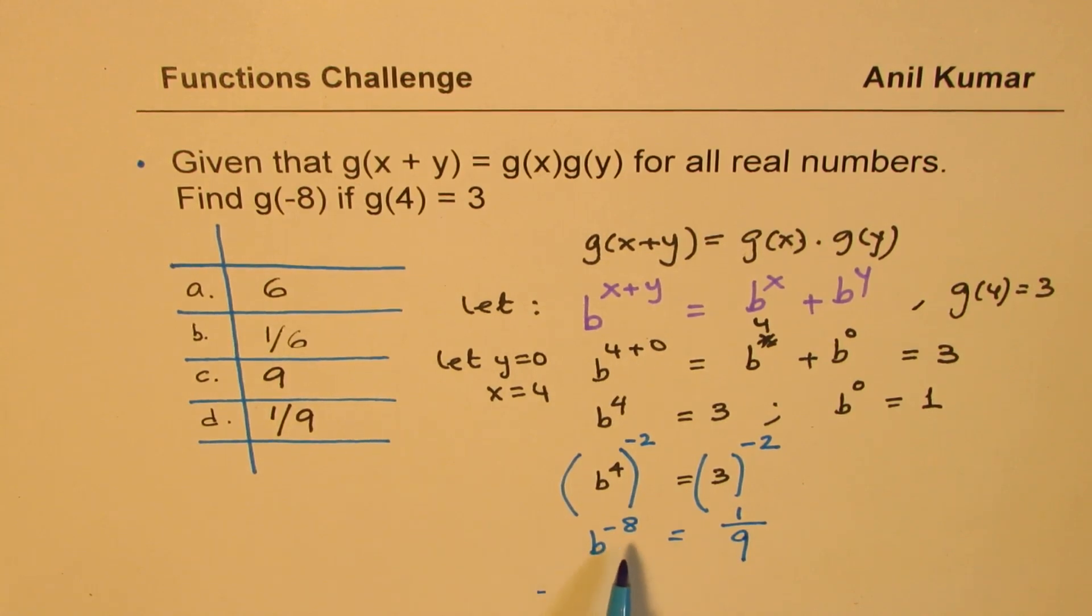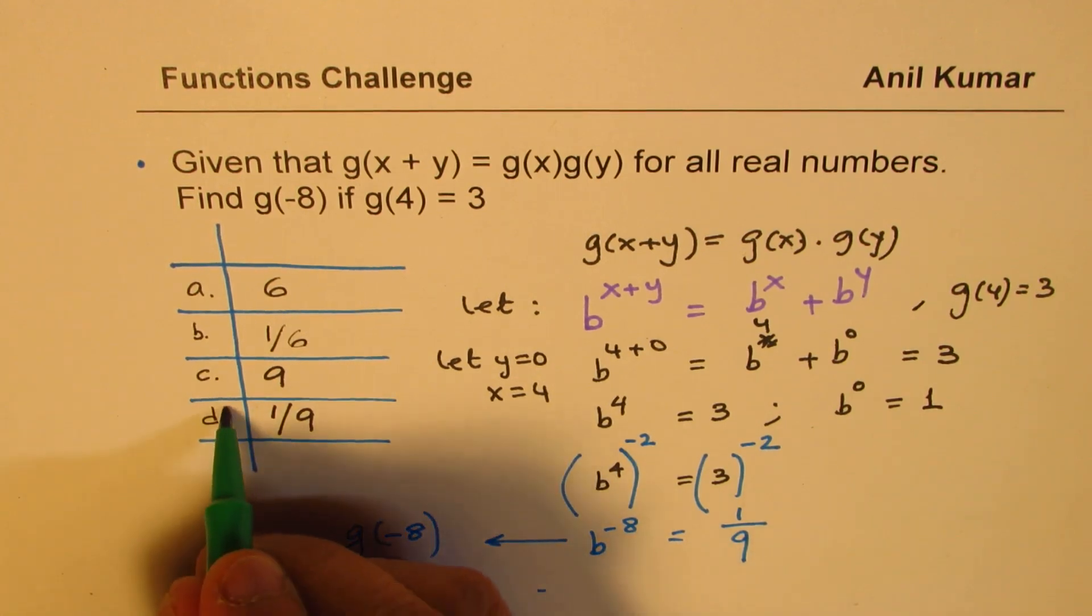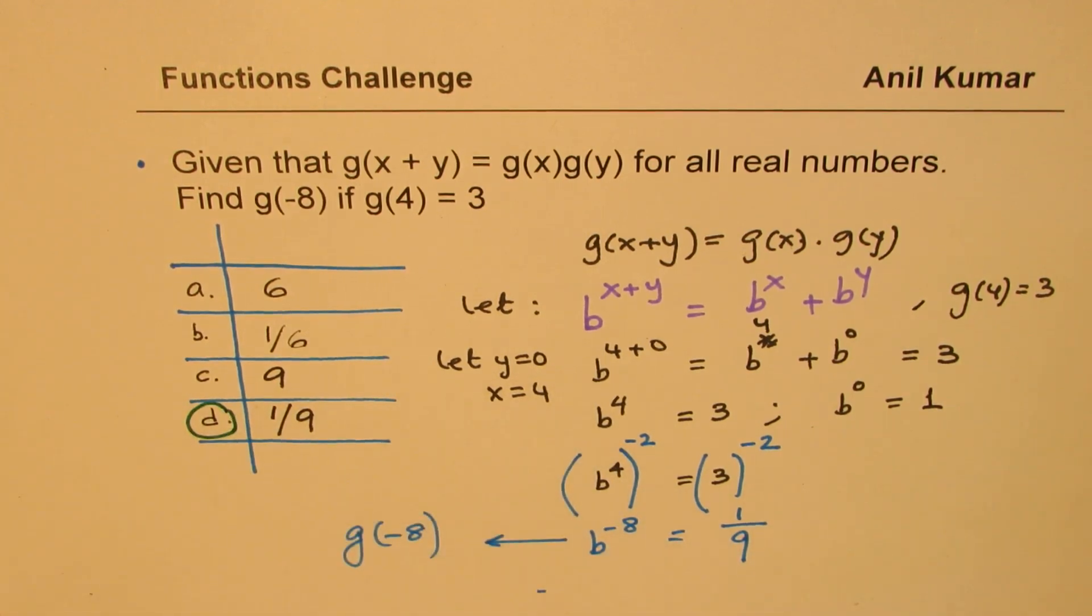b to the power of minus 8 is my function, g of minus 8, correct? So that is g of minus 8. It does make sense to you. So we got the value of g of minus 8 as 1 over 9. Perfect. So I can actually solve this question in this fashion. So I get the value as d as my correct option. So I hope that makes sense.